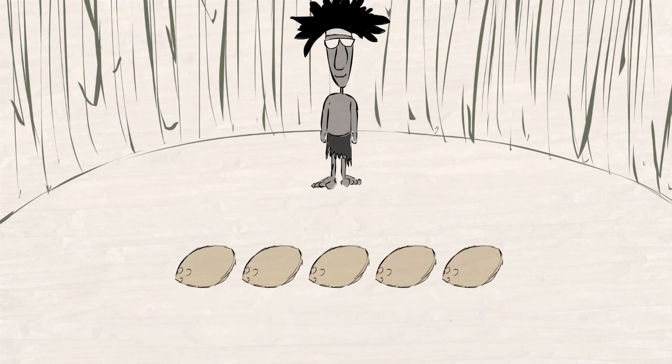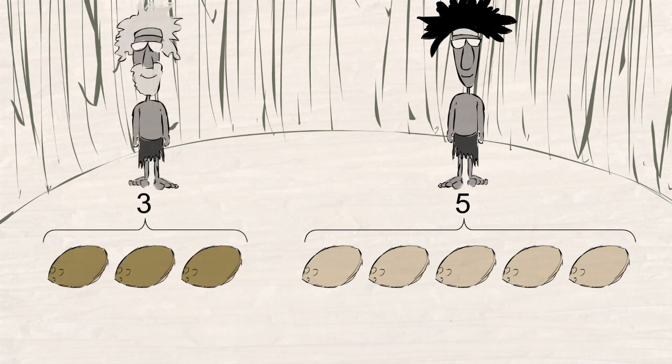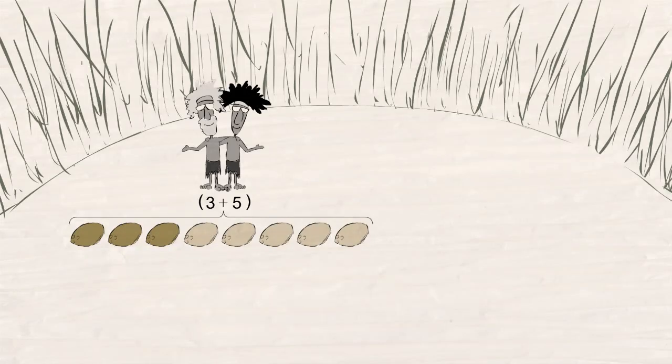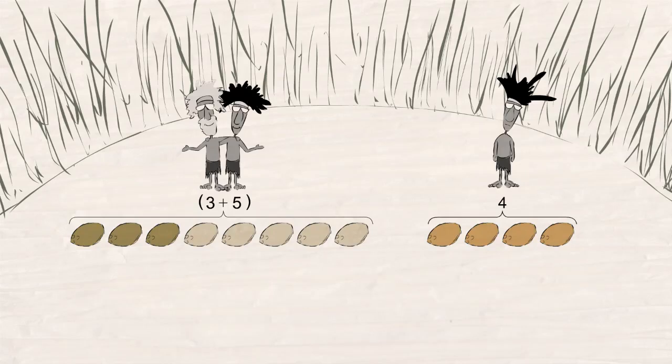In addition to the commutative property, here is another interesting property of addition that we discovered. Let's say that you have five coconuts and your neighbor on the left has three. Both of you get together and pool your coconuts into one group of eight. Then your neighbor on the right gives you four more. Now you will have your group of eight plus four more for a total of twelve coconuts.